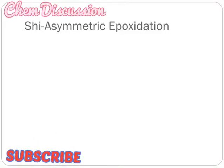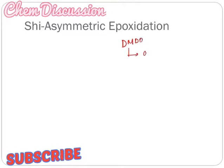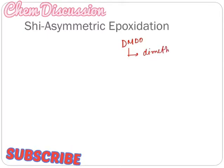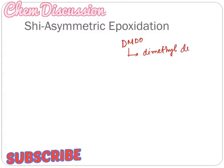Hello guys, welcome to my YouTube channel Chem Discussion. Today I am going to discuss Shi asymmetric epoxidation reaction, and this topic is very important for CSIR NET, GATE, as well as different competitive examinations based on chemistry. Before going to the topic Shi asymmetric epoxidation reaction, we should know another epoxidation technique using DMDO. What is DMDO? DMDO is dimethyl dioxirane.